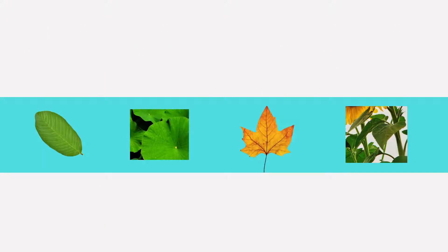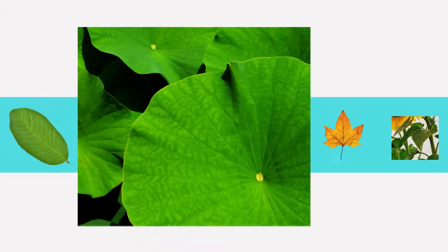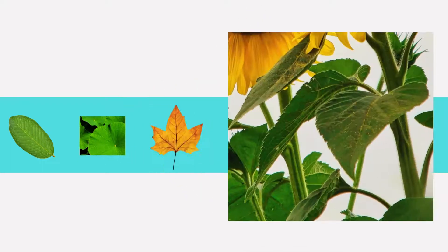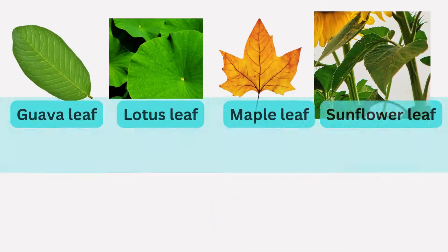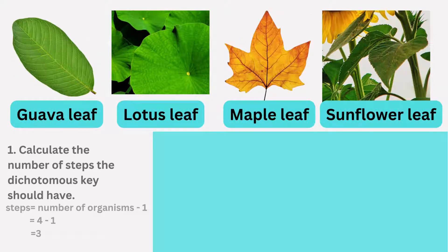Let's apply these steps practically by constructing a key to identify leaves from the guava, lotus, maple, and sunflower plants. To determine the number of steps, we subtract one from the number of leaves, resulting in three steps. These steps are designated as 1a, 1b, 2a, 2b, 3a, and 3b, with each step presenting two opposing features.